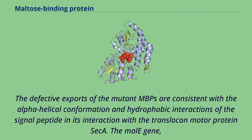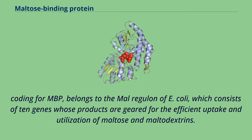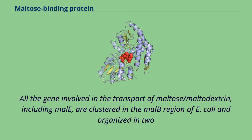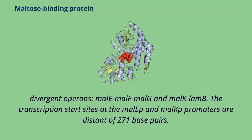The defective exports of the mutant MBPs are consistent with the alpha-helical conformation and hydrophobic interactions of the signal peptide in its interaction with the translocon motor protein SecA. The malE gene coding for MBP belongs to the mal regulon of E. coli, which consists of 10 genes whose products are geared for the efficient uptake and utilization of maltose and maltodextrins. All genes involved in the transport of maltose/maltodextrin, including malE, are clustered in the mal region of E. coli and organized in two divergent operons: malE-malF-malG and malK-lamB.